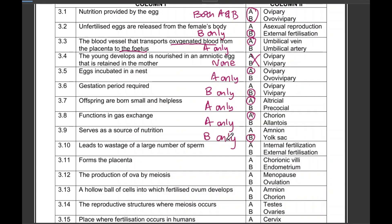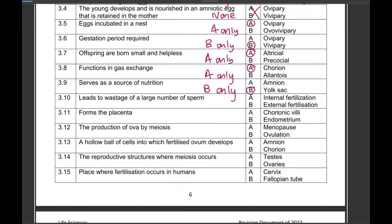Remember to like this video and subscribe to my channel — it's free, just like following someone on Instagram or TikTok. Please also do not skip the ads. Question 10: 'Leads to wastage of a large number of sperm' — that is obviously B only.